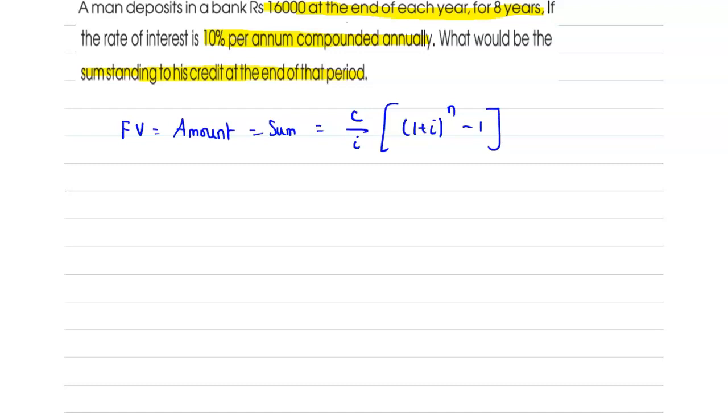Here it is given as years. In some cases it may be quarter period or half yearly period. And here the C value, that is the installment amount, is given as 16,000. Rate of interest i is 10%, which is 0.1, and the time period n is given as 8 years.